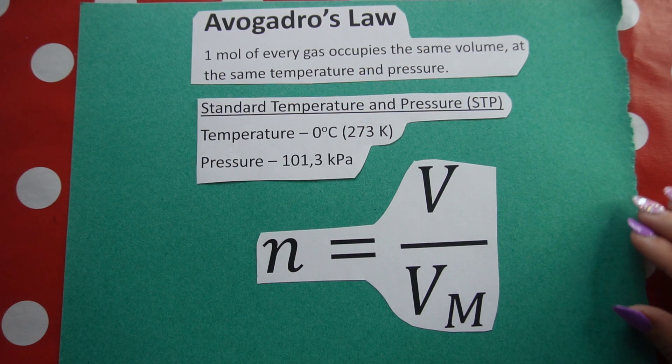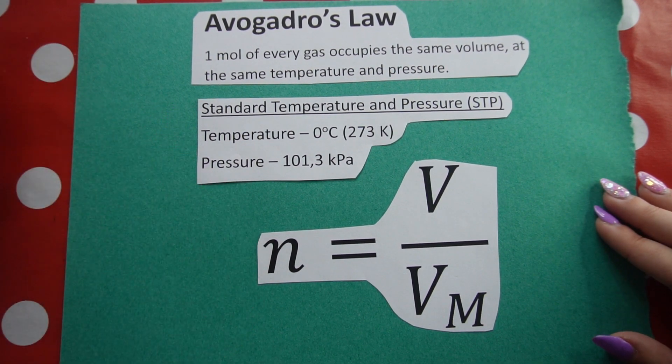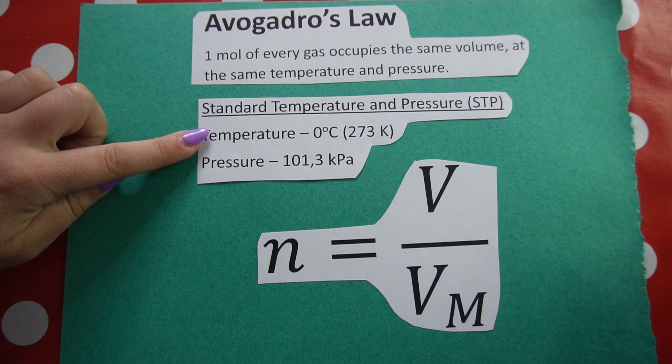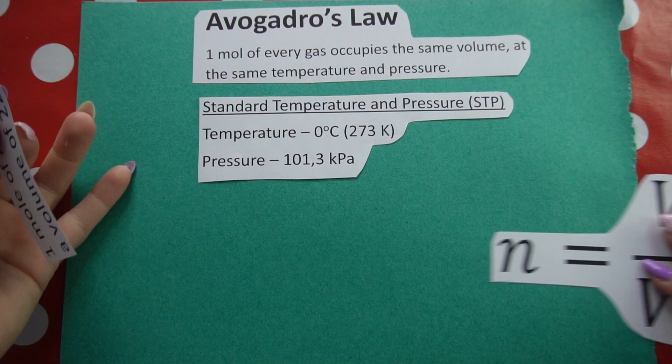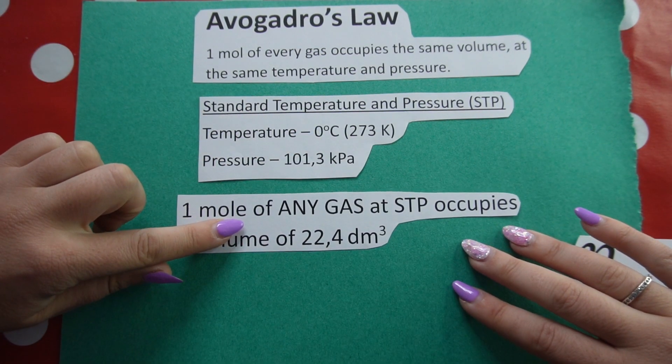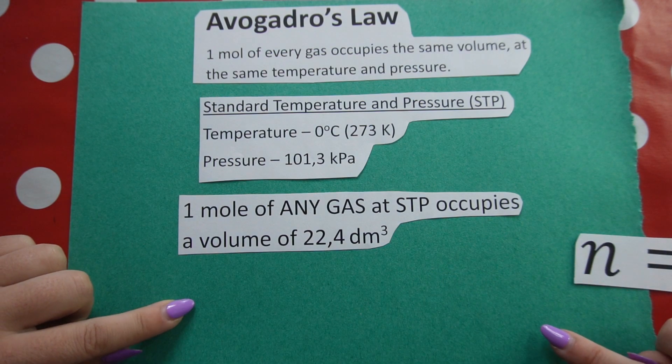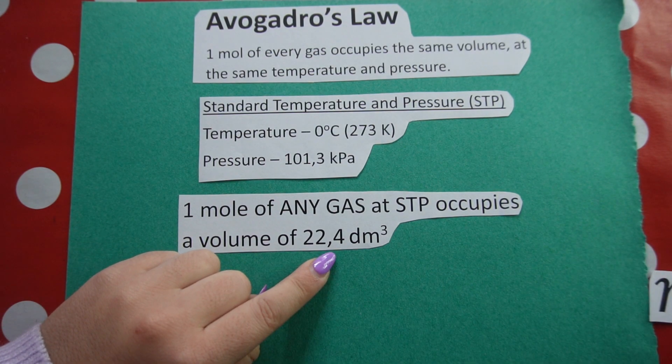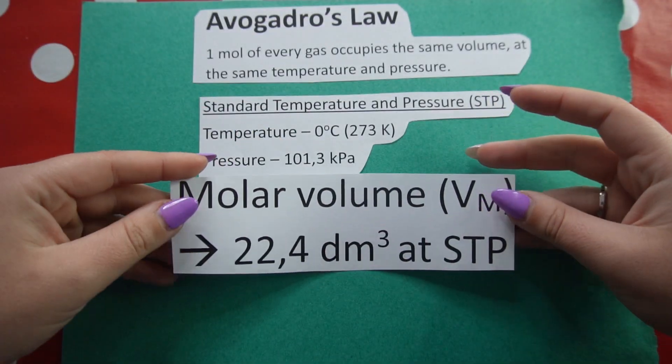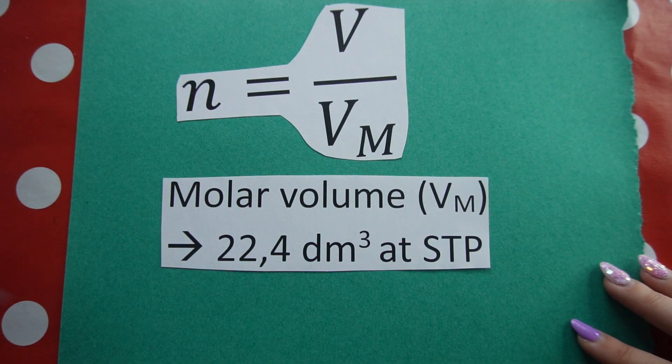hydrogen gas, helium gas, whatever I'm talking about - one mole of any of those gases at this temperature and pressure has a volume of 22.4 cubic decimeters. This is a constant and this is what we call molar volume. It's essentially a constant in our formula.